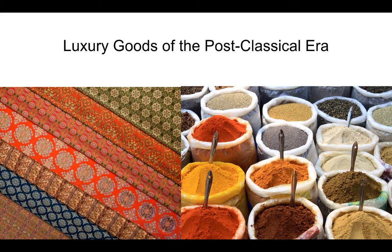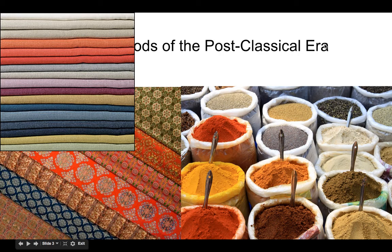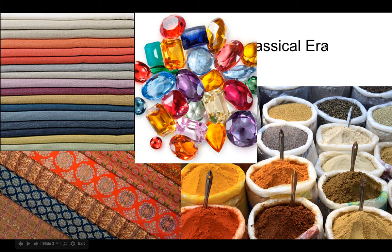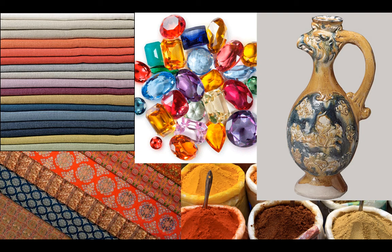Trade in the post-classical era was all about shipping luxury goods — that's what makes the most money. You want to be able to make a profit on these long voyages, and there's a lot of risk. Some of the most famous luxury goods you should think of are spices and silk, but other things were also being traded, including cotton, precious gems, precious metals, and ornamental goods like porcelain, decorative items, and jewelry. These luxury goods are extremely valuable and highly sought after, which entices merchants to take the risk of such a long voyage. We can still see the remnants today — potsherds, broken plates, or lapis lazuli from Afghanistan — as evidence of trade throughout the Indian Ocean network.